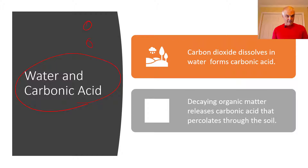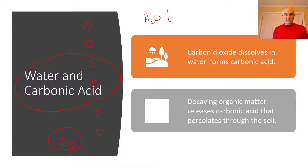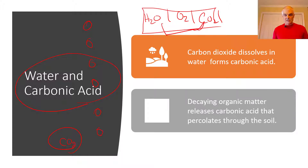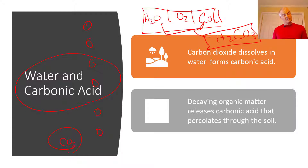As a drop of water falls down through the air, it also picks up another gas — carbon dioxide. There's carbon dioxide in the air; it's an important part of our atmosphere. As it falls, the CO2 dissolves in the water. So the water now has mixed in with it some O2 and some CO2, and when you put H2O and CO2 together, you make carbonic acid, which will decay certain minerals because it's acidic.